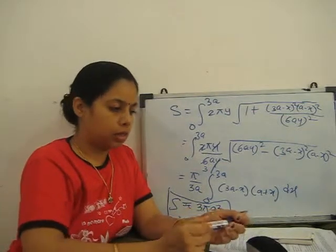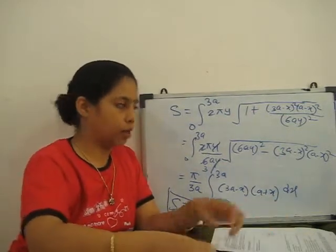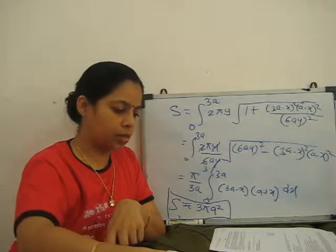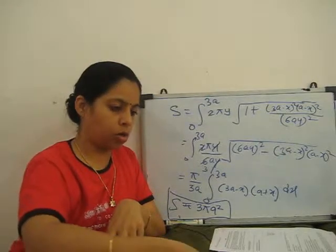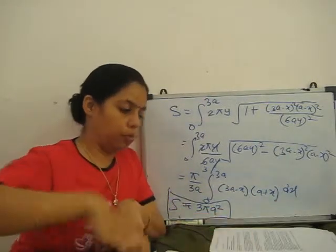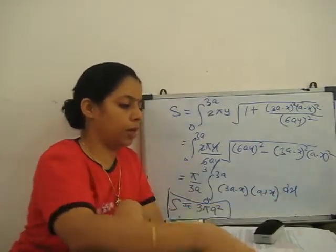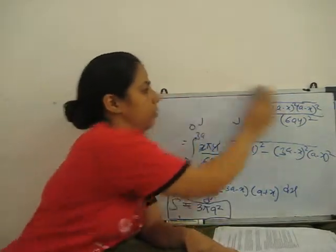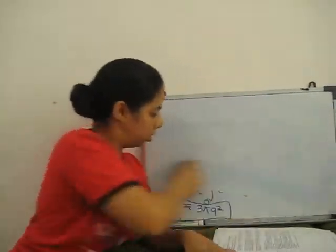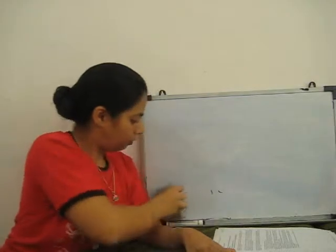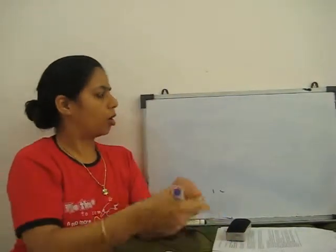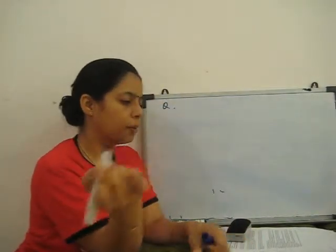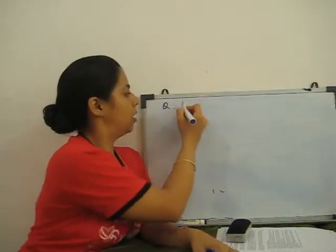Next we discuss one more problem of surface area of revolution. That is for a polar curve. Again, for the polar curve there is a cardioid. If we revolve that cardioid about the axis, find the surface area.